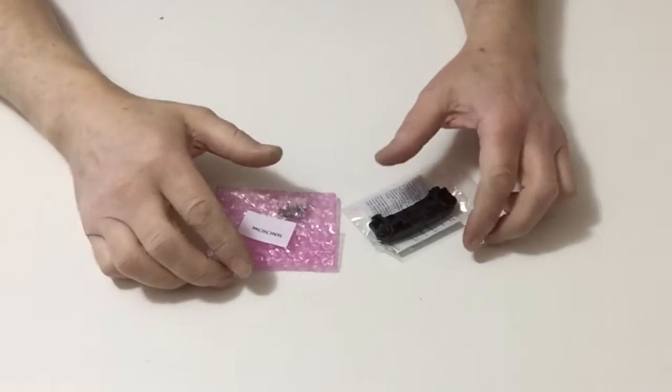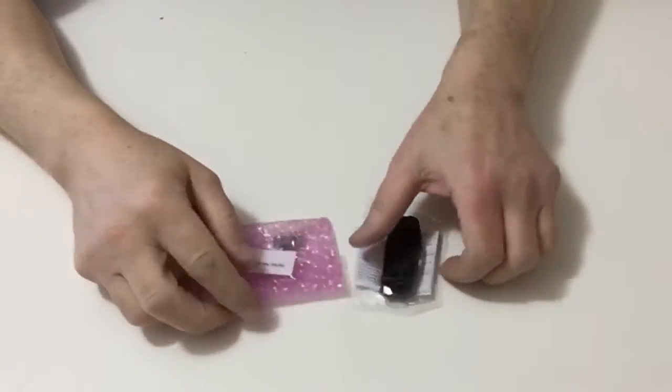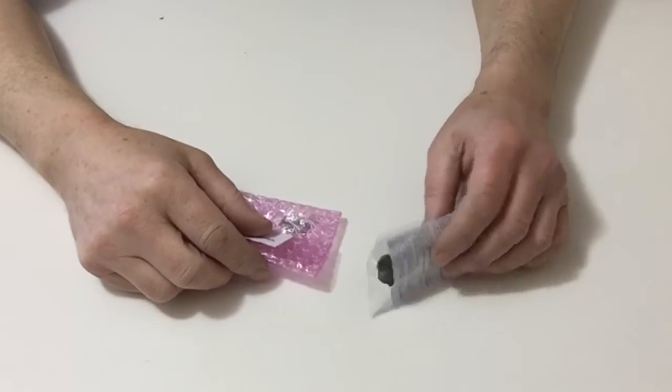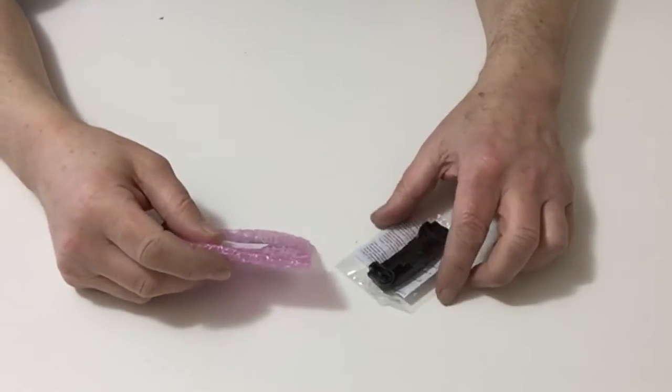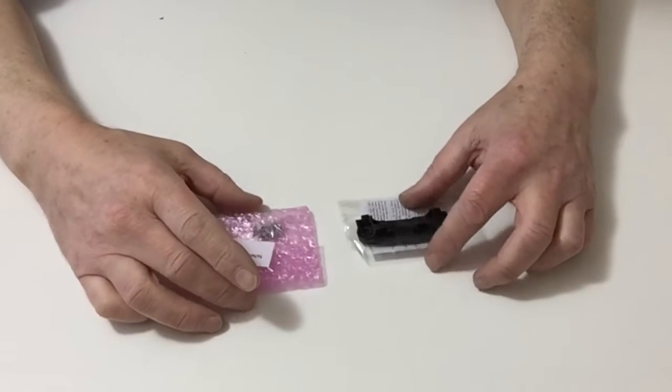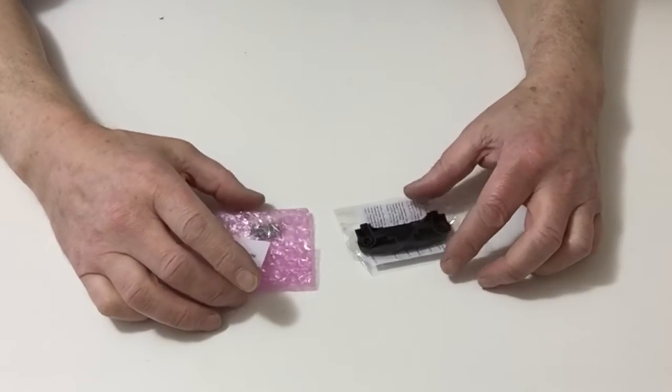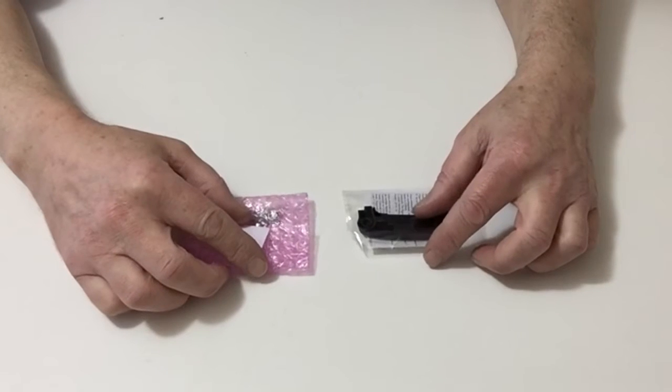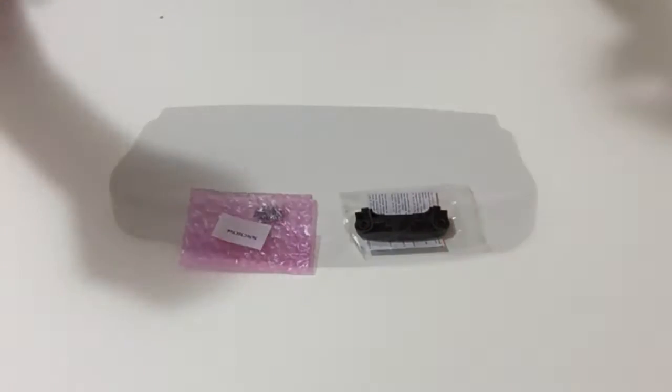In stage 40 of build your own Robbie you get the rear hip panel and the power distribution board. Once again there's nothing to construct in this stage, so put these parts aside ready for future use.